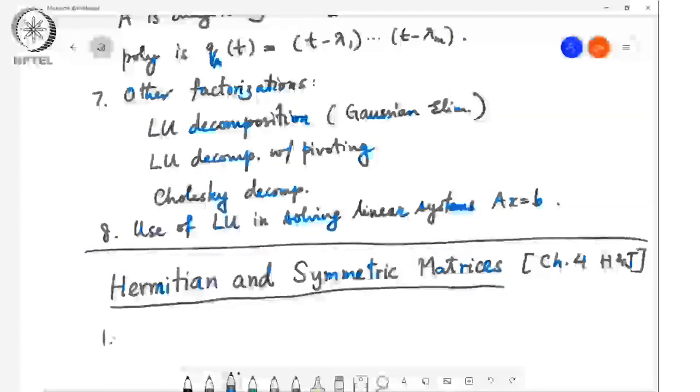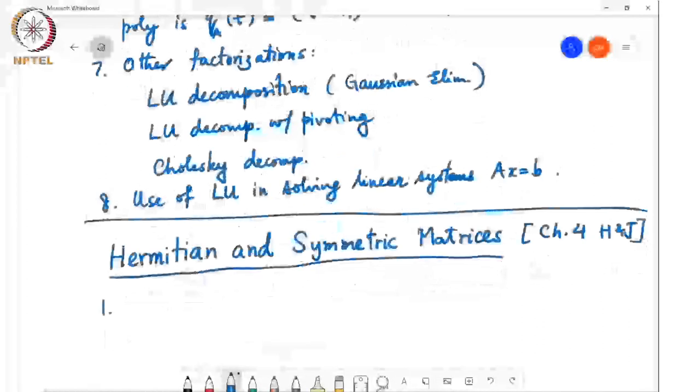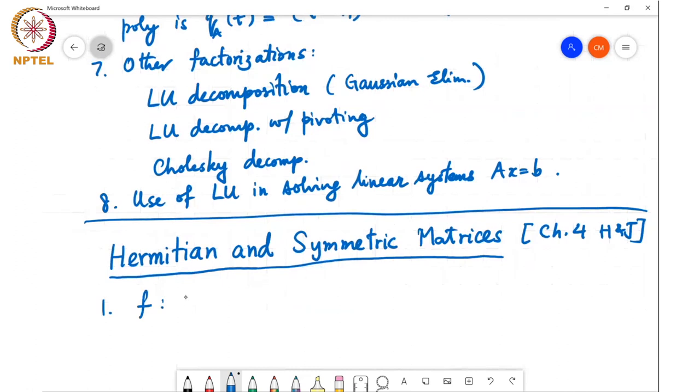For example, if you're looking at a function f from some n-dimensional real space D to the real line, and suppose it is twice continuously differentiable.